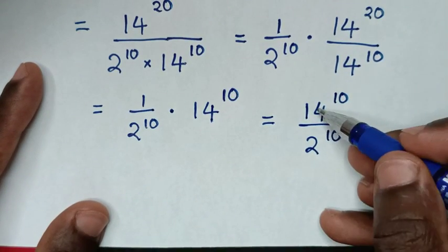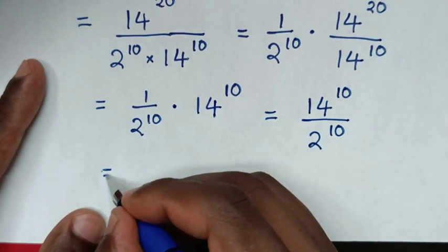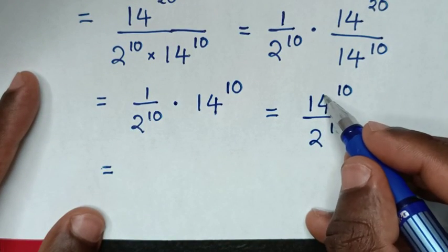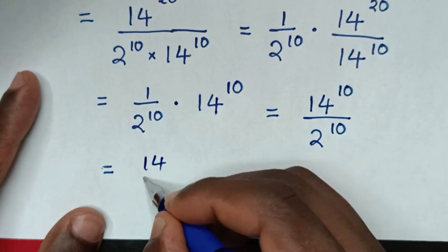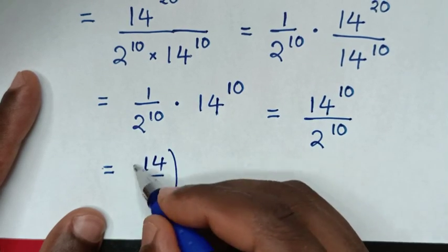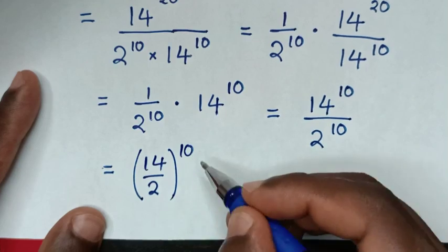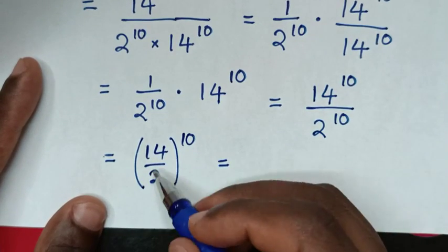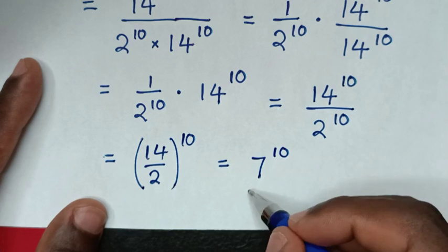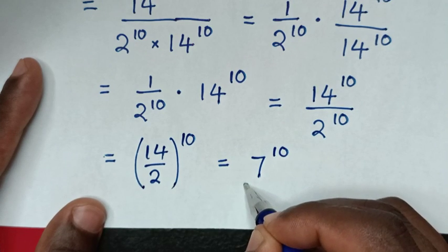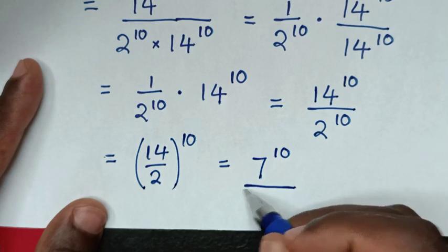Now, in here, division of exponents with the same power of 10 — so it will be equal to the division of the bases, 14 divided by 2. So 14 over 2, then bracket with the same power of 10, which is equal to 7 power of 10. So 7 power of 10 is our answer, or 70 billion.